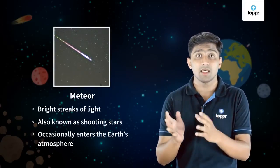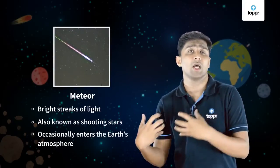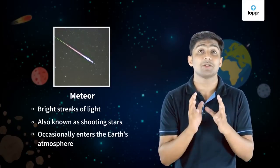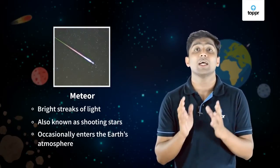Now let's see about meteors and meteorites. If you observe the night sky, sometimes you can see a shooting star moving with a very high speed. It is not a star. They are called meteors.